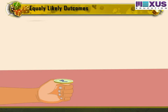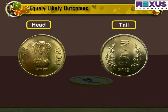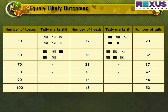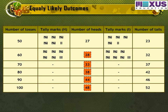Let's do an experiment. Toss a coin 50 times and note the number of heads and tails obtained. We see that the results are nearly equal. If we perform this experiment for 60, 70, 80, 90, and 100 times and note the outcomes of heads and tails, we'll observe that if we increase the number of tosses more and more, the number of heads and the number of tails comes closer and closer to each other.